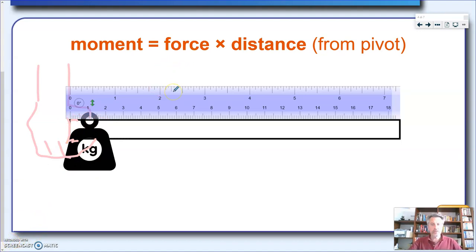So let's try to use this formula to find the moment that this force, because remember it's a mass, so it has a weight, it's pulled down by gravity, so it's applying a moment around. What is the pivot in this case? The pivot is obviously my hand.